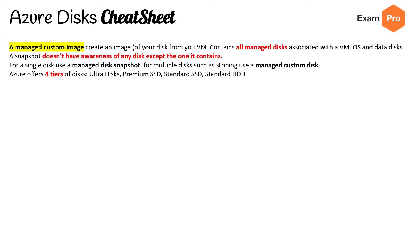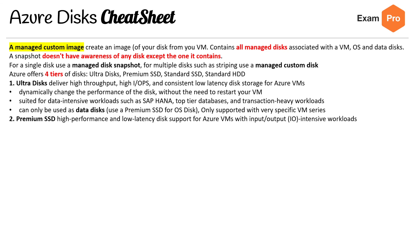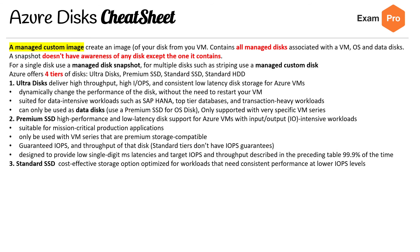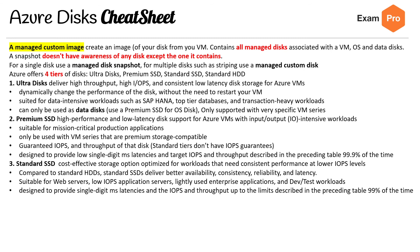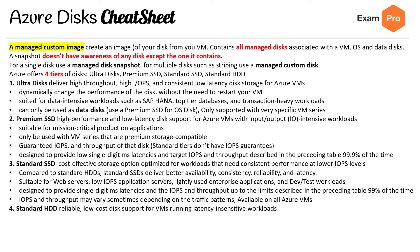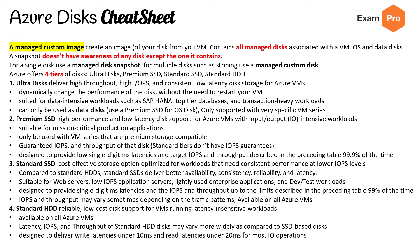Azure offers four tiers of disk: Ultra, Premium SSD, Standard SSD, and Standard HDD. Ultra disks deliver high throughput, high IOPS, and consistent low latency disk storage for Azure VMs. Premium SSD offers high performance and low latency disk support for Azure VMs with input/output intensive workloads. Standard SSD is a cost-effective storage option optimized for workloads that need consistent performance at lower IOPS levels. Standard HDD provides reliable, low-cost disk support for VMs running latency-insensitive workloads. Just know the key concepts and what each disk type is used for.